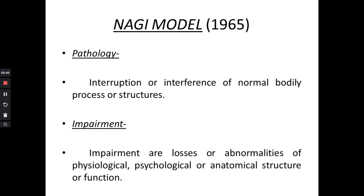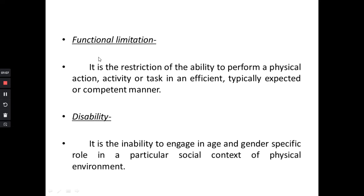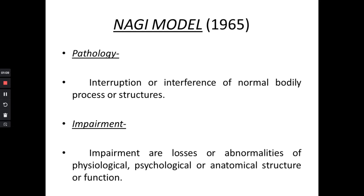In this video we will discuss the first model, the NEGI model, and in the second video we will discuss further. The NEGI model is named after its author and was given in 1965 by NEGI. He considered four components: pathology, impairment, functional limitation, and disability.